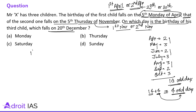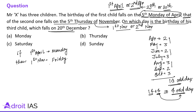So it means: if 1st April is Monday, then after 4 days, 1st November will be Monday plus 4 days, which is Friday. But 1st November can't be Friday, because if 1st November is Friday, then that November cannot have 5 Thursdays. So this case is not possible.